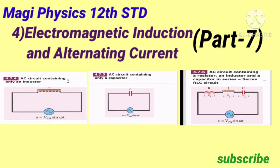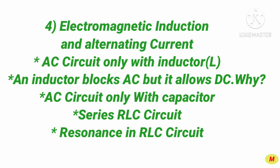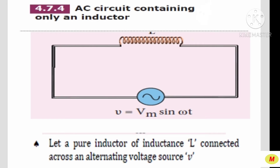Hello students. Now we are going to discuss some important topics in the 4th lesson: Electromagnetic Induction and Alternating Current. The first one is about an AC circuit containing only an inductor.